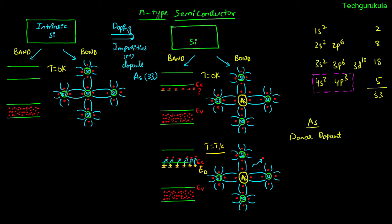In general, pentavalent elements added to silicon act as donor dopants. At this temperature, some silicon bonds may also break due to phonons — vibrations of atoms in the lattice — and some valence electrons find enough energy to reach the conduction band, leaving holes in the valence band. The number of electrons in the conduction band is far greater than the number of holes in the valence band.